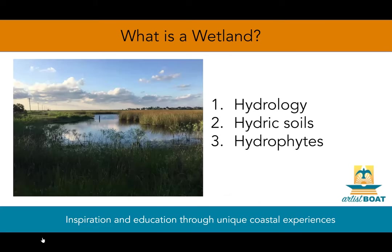In order to understand Galveston Bay, we need to get familiar with what a wetland is. A wetland is an area that is often inundated — inundated is just a fancy word for flooded. This flooding can be permanent or it can be seasonal. So wetlands are swamps, marshes, bogs, fens, and ecosystems similar to these.